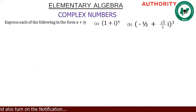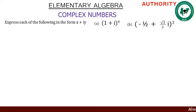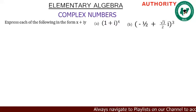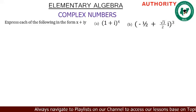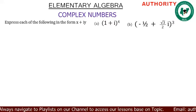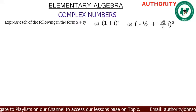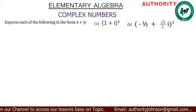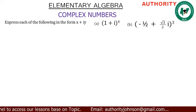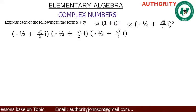Now let's take the second example. We should express (−1/2 + (√3/2)i) raised to power 3 in the form of x + iy. Since we have something raised to power 3, we can open this bracket into three places. Let's go — we'll open it in three places.